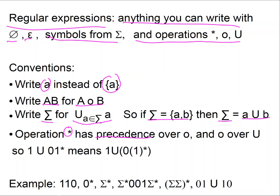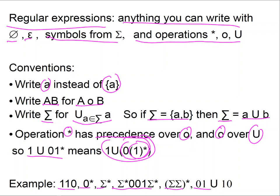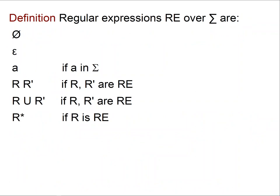In terms of precedence, the Kleene star has precedence over concatenation, and concatenation has precedence over union. So if I write '1 union 01*', what is meant is: first you apply the star to 1, then you concatenate this with 0, and finally you take the union of this with 1. Below is a bunch of examples of regular expressions like 110, 0*sigma*, sigma*00 1sigma*, sigma(sigma*)^*01 union 10.